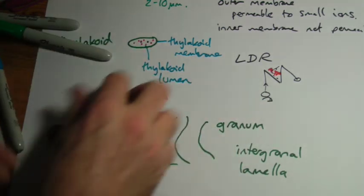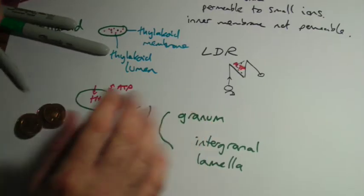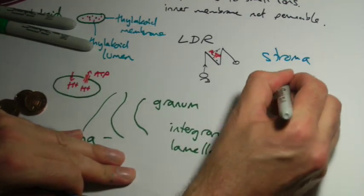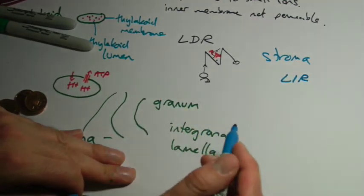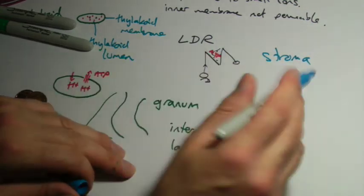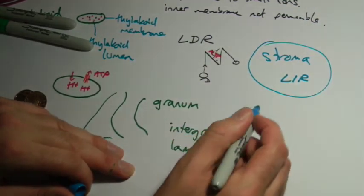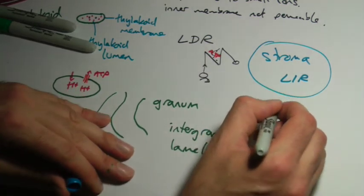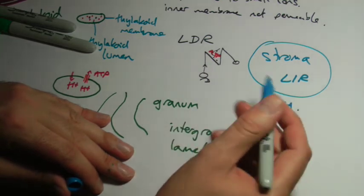I did mention, back to the stroma. The stroma, the liquid inside, is the site of the light-independent reaction, the bit where we have Rubisco and TP and GP and all that kind of stuff. That happens in the stroma. Also in the stroma you would have some DNA. The chloroplast has its own DNA.